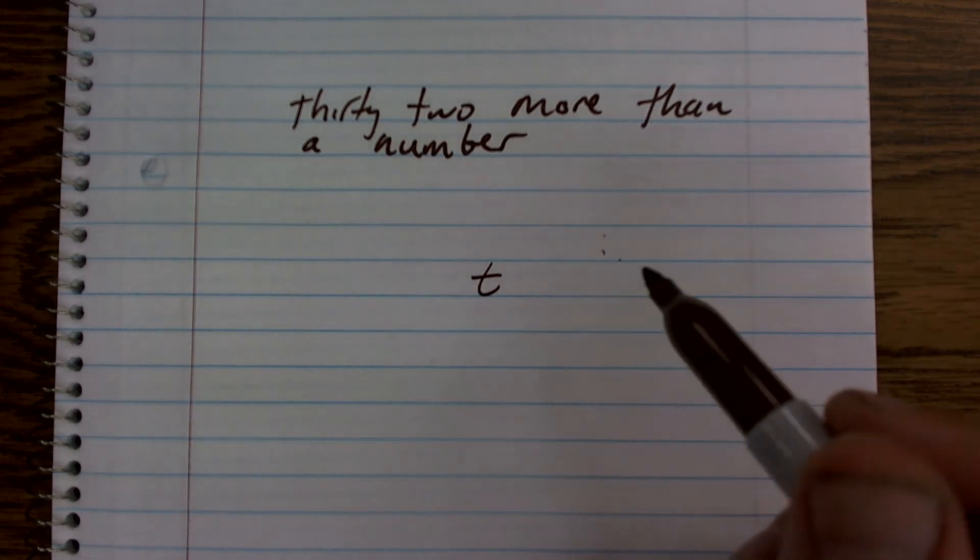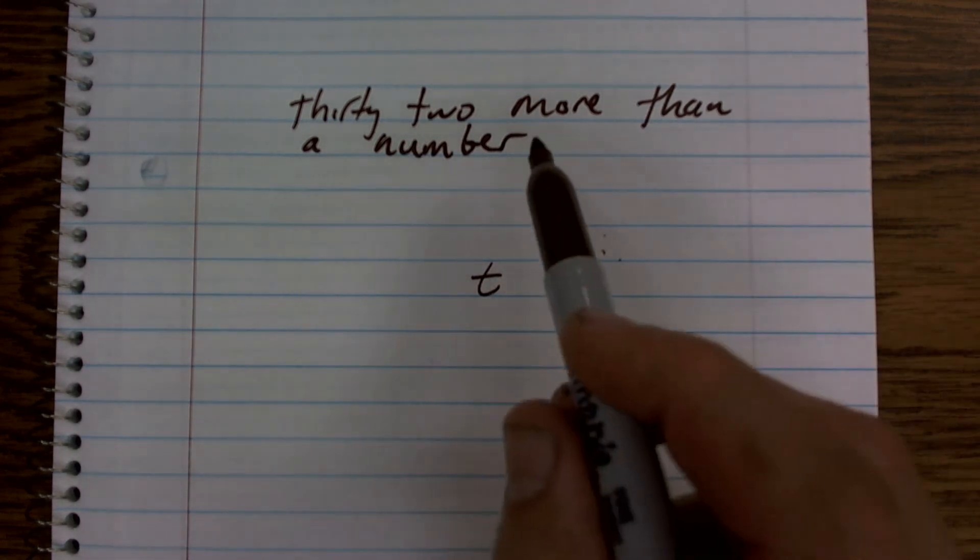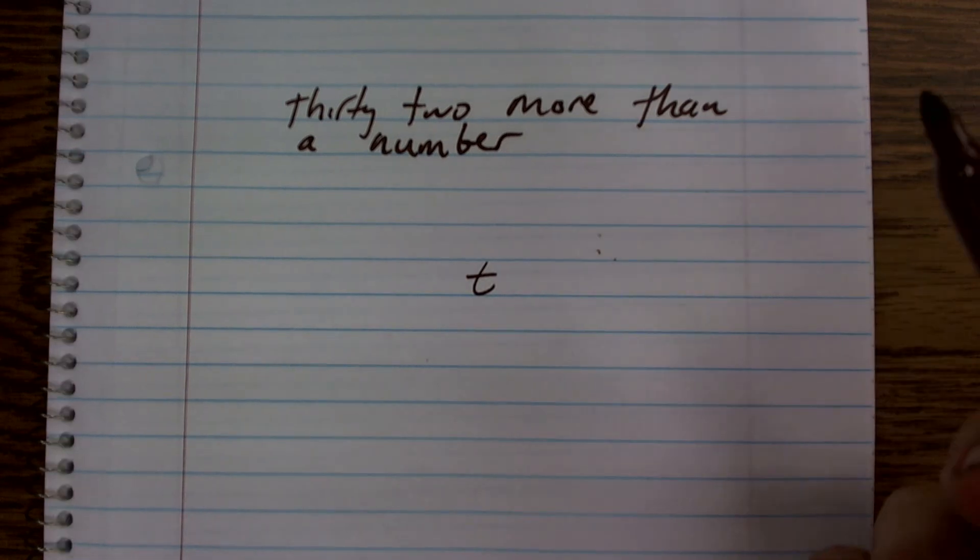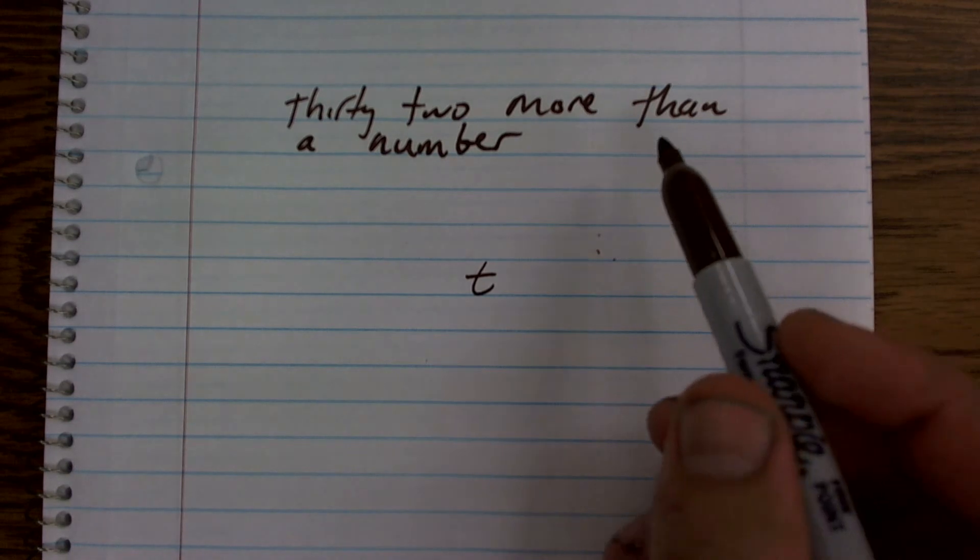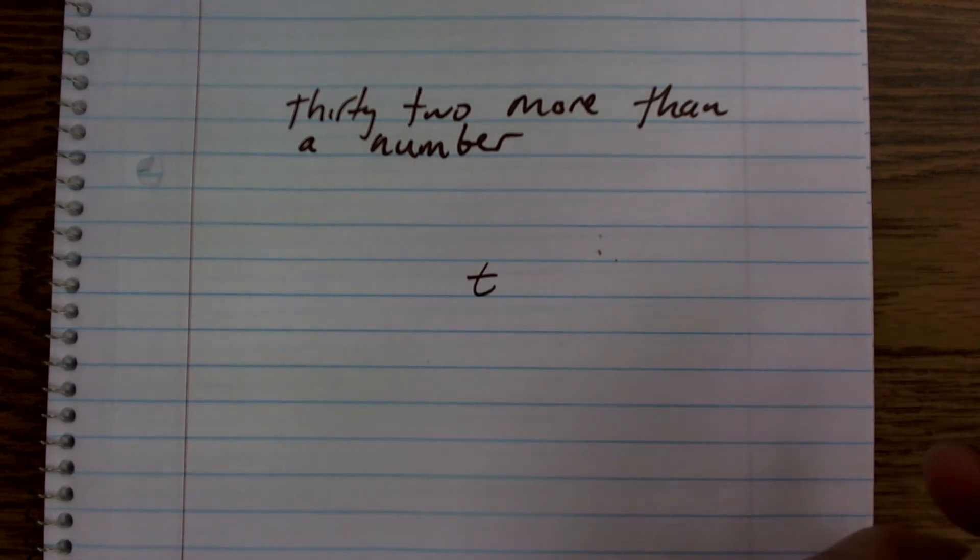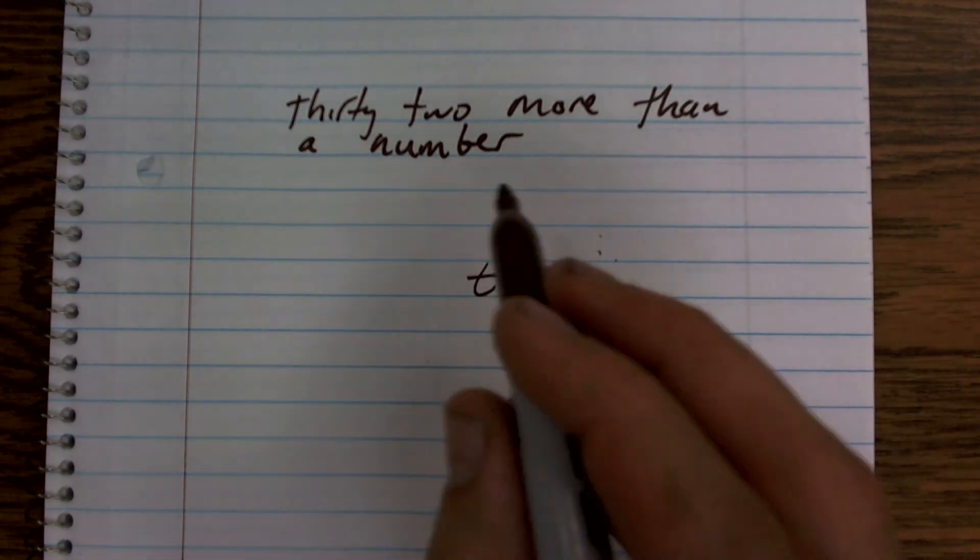So t represents my number. Now do I have 32 more than, so I add 32, subtract 32, multiply by 32, or divide by 32? Well, more than is just going to tell me I'm just going to take 32 more than a number.